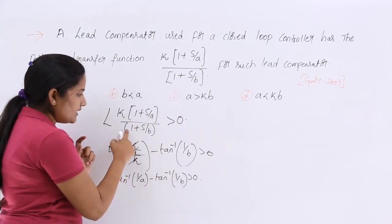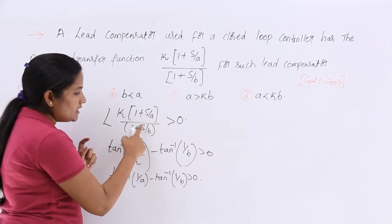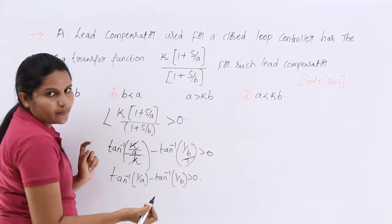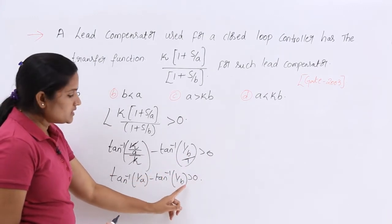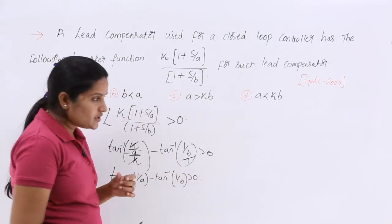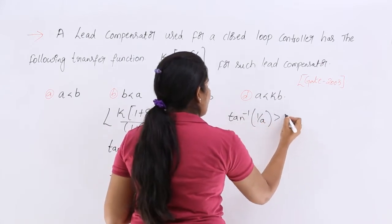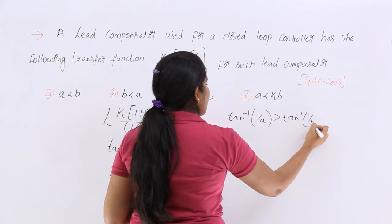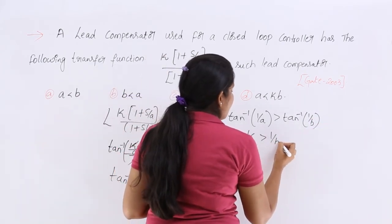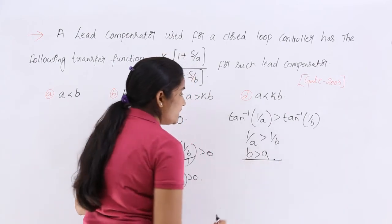So, the S coefficient for the denominator is 1/B divided by constant term 1, which gives 1/B only. Therefore, the condition becomes: tan inverse (1/A) minus tan inverse (1/B) greater than 0. This means tan inverse (1/A) is greater than tan inverse (1/B). The tan inverse cancels, giving 1/A greater than 1/B.